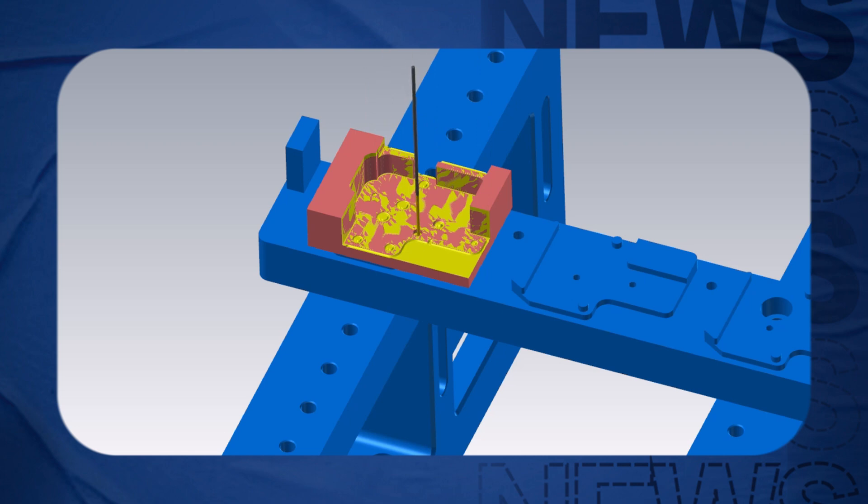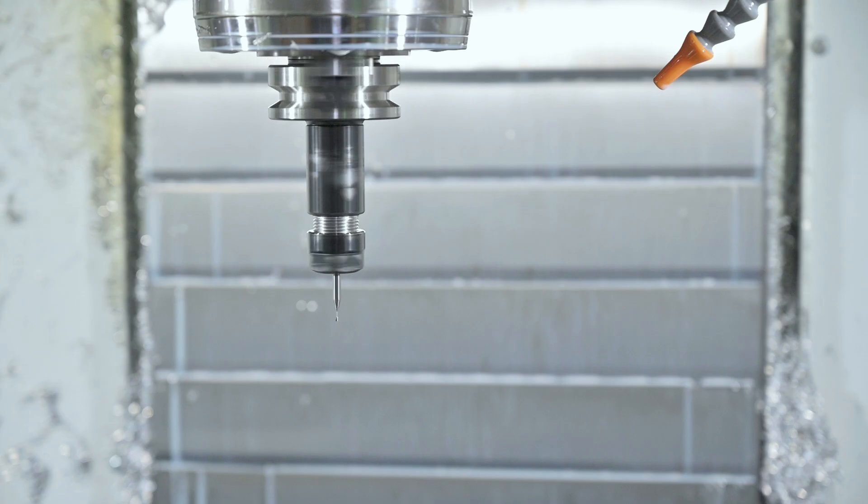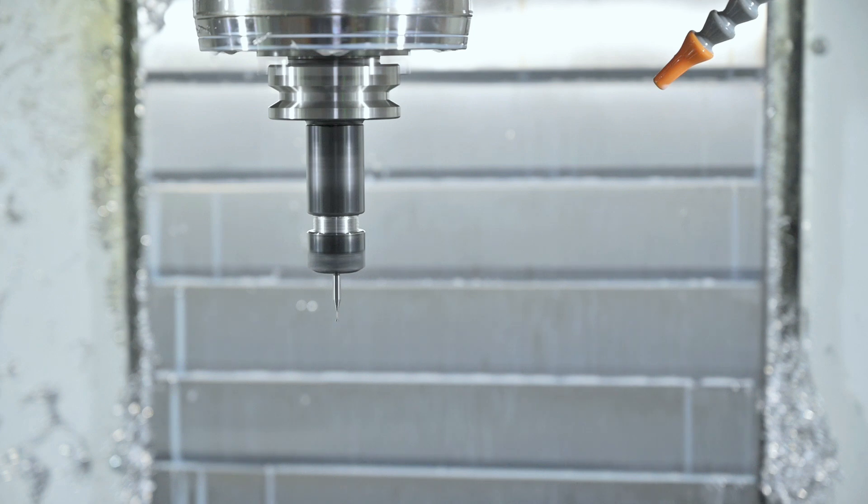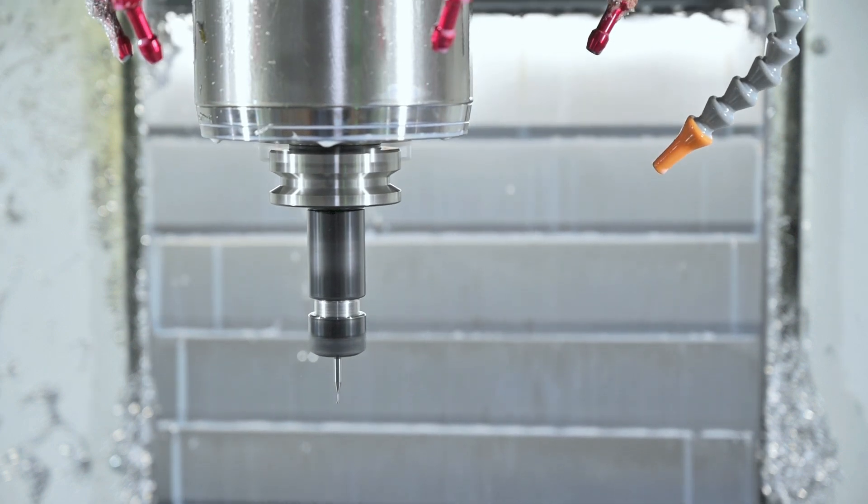For finishing, we use different diameter tools to precisely cut the features and achieve the required accuracy. This machine features a high-speed spindle that rotates at 12,000 rpm.